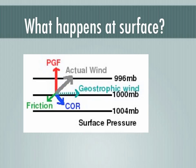On the surface, however, there is a presence of friction which will slow down wind speed. Since Coriolis force is directly correlated with wind speed, a slower wind speed will equal a smaller Coriolis force.